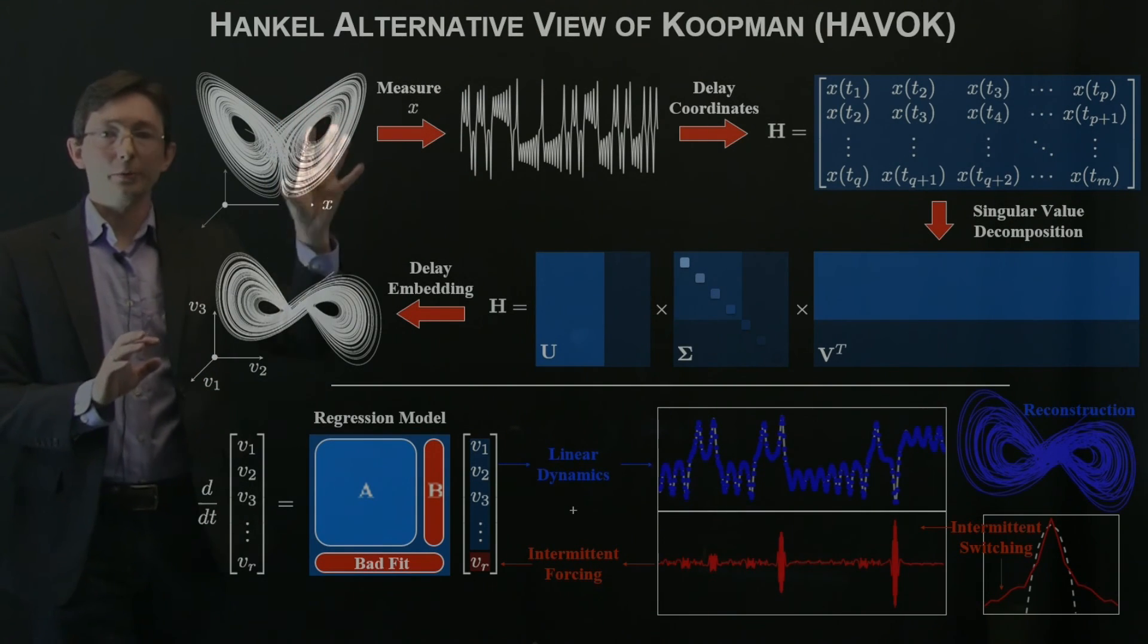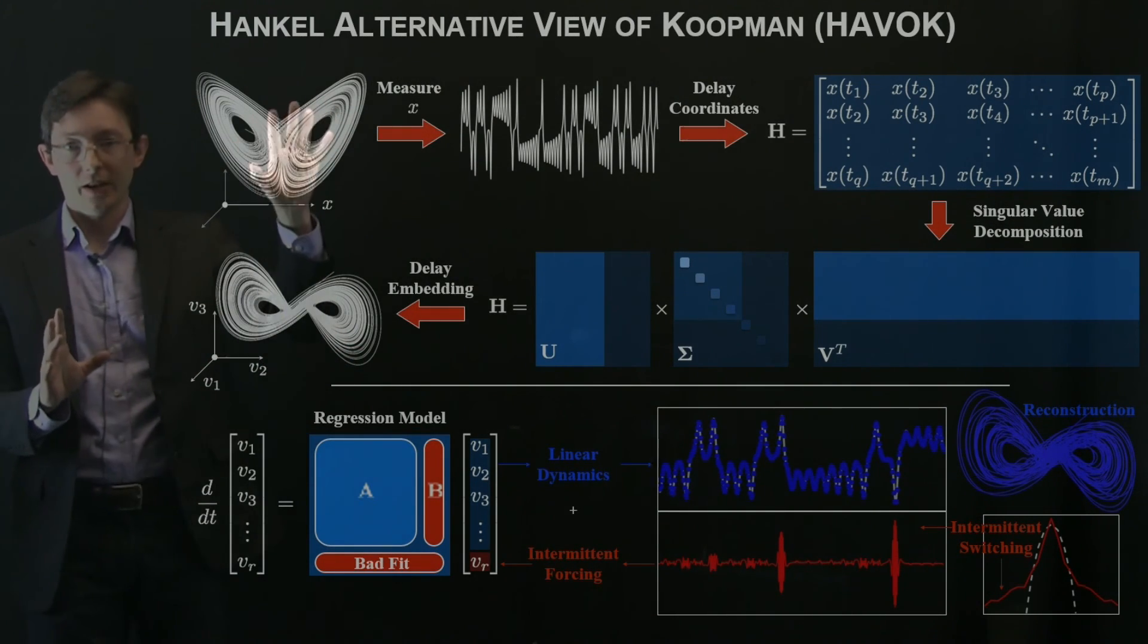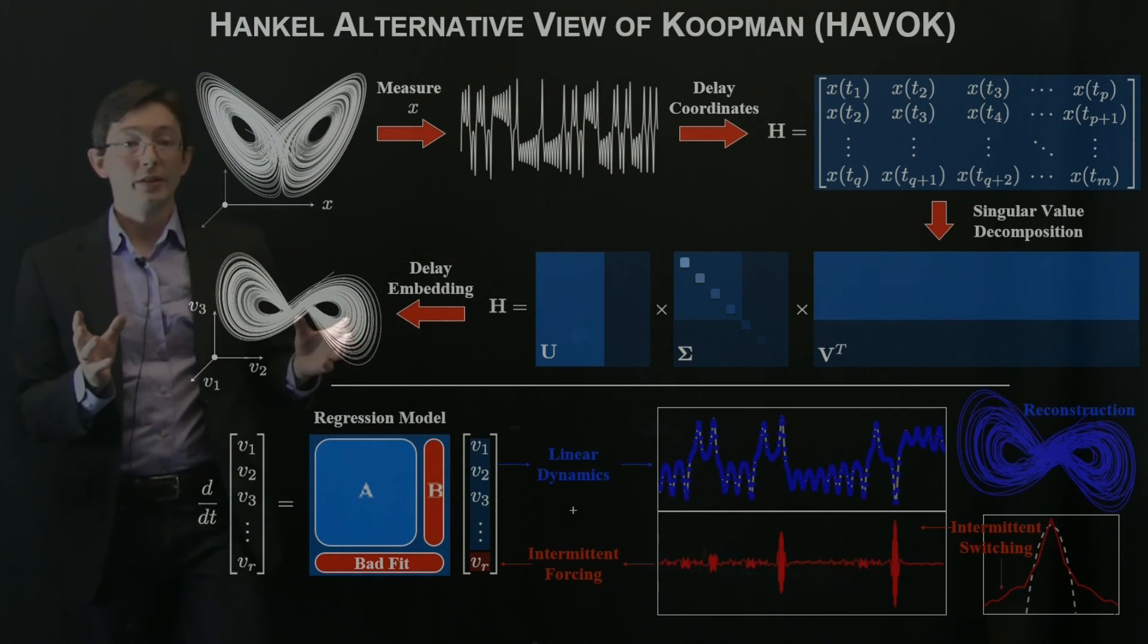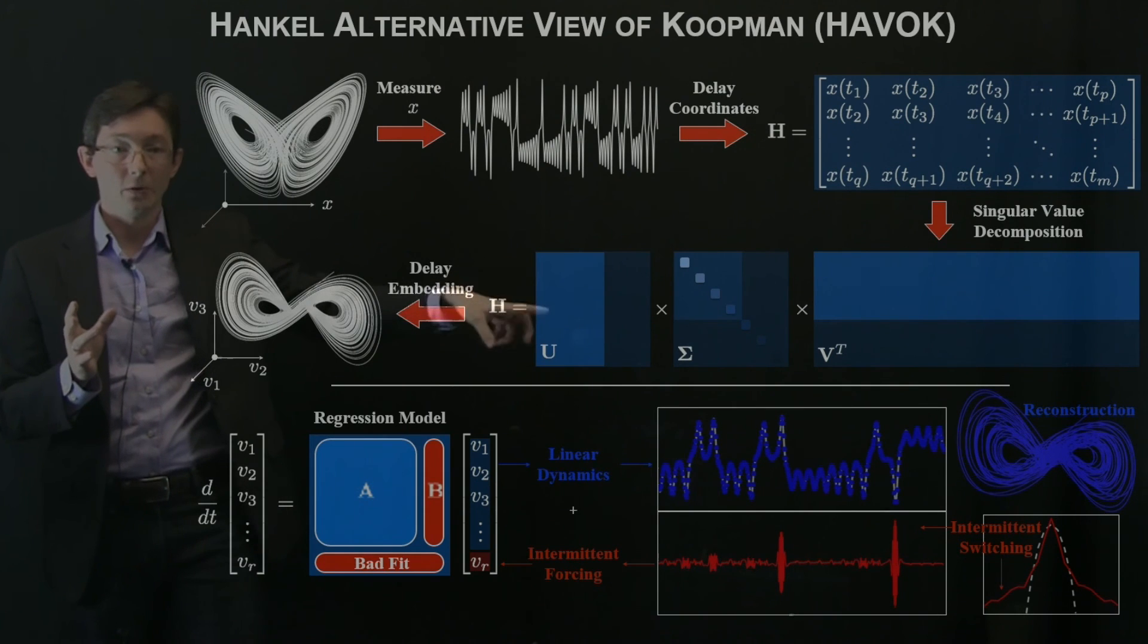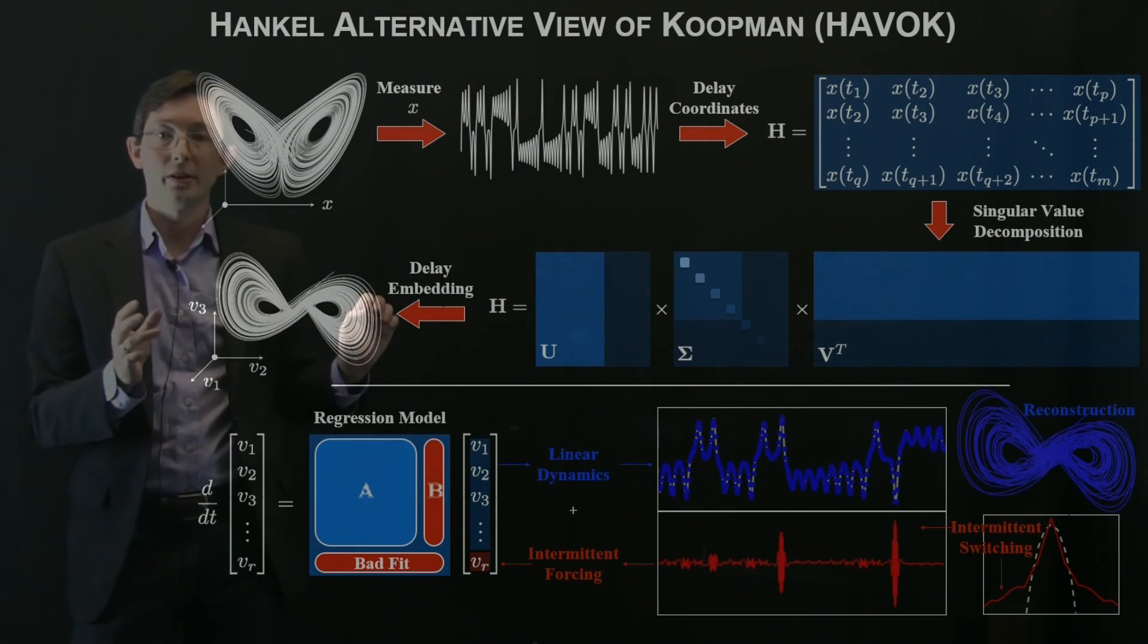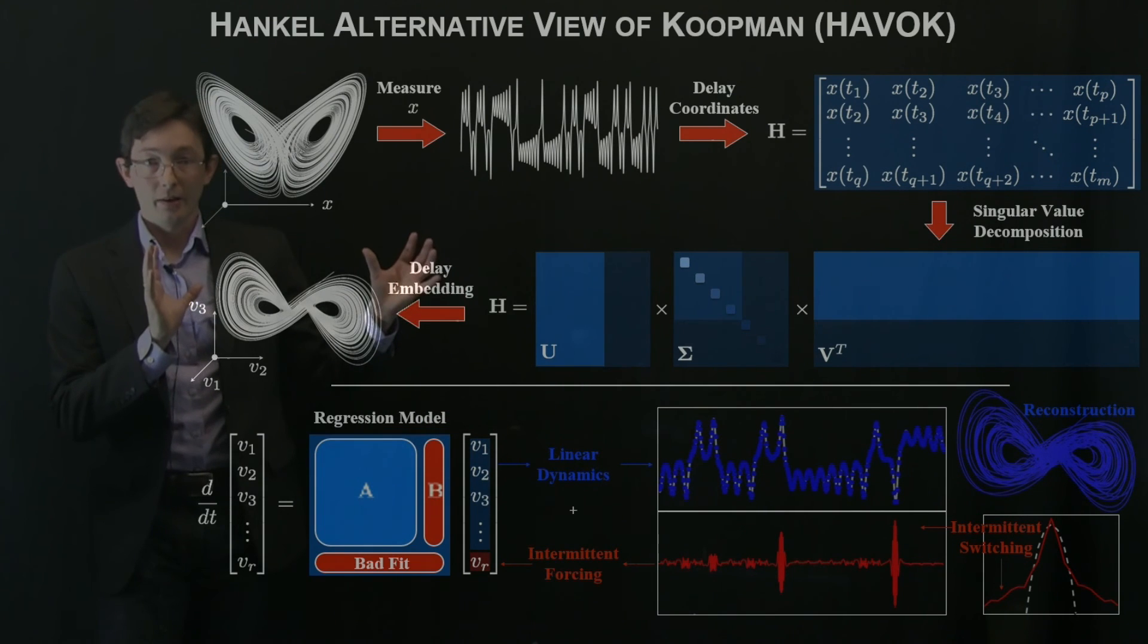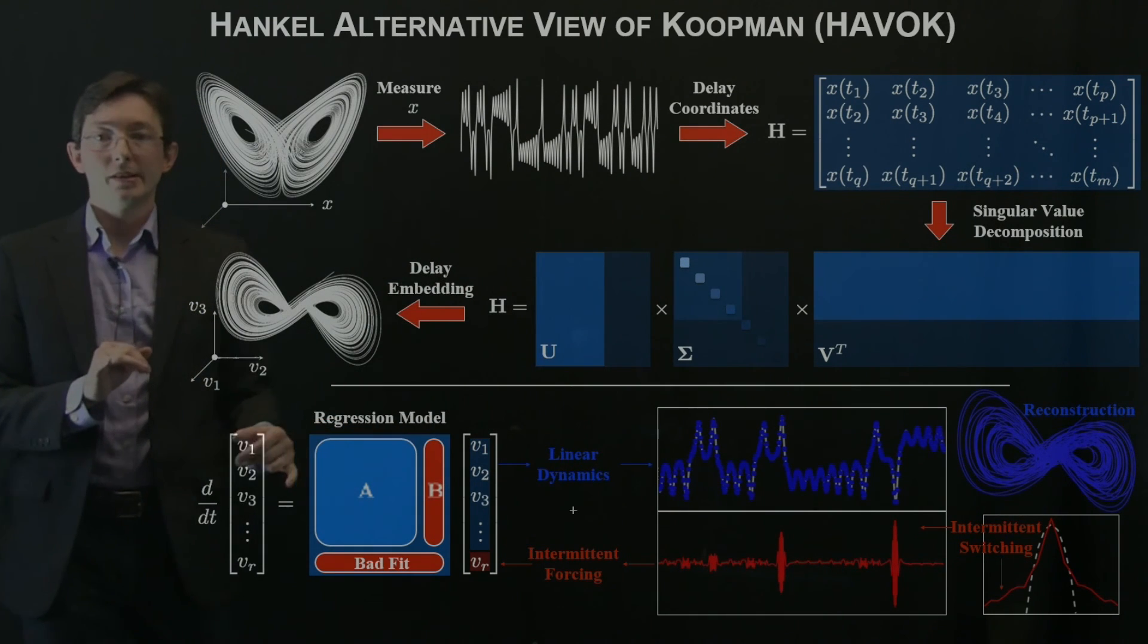This is just a recap of this HAVOK model. You have your system, you measure data, you build a Hankel matrix in time delay coordinates using the singular value decomposition, and you can build a linear regression model in those time delay coordinates.